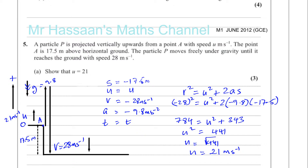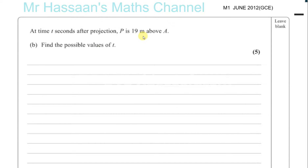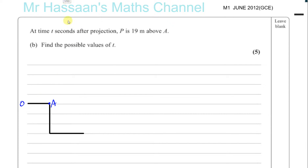The second part of the question asks: at time t seconds after projection, P is 19 meters above A — find the possible values of t. So again, the particle is being projected from point A, which is 17.5 meters above the horizontal ground. That is our zero position. It is projected upwards, reaches the top of its flight, then comes back down and hits the ground.